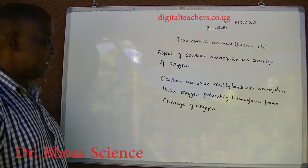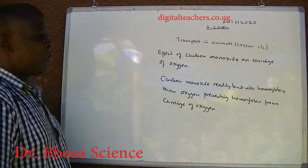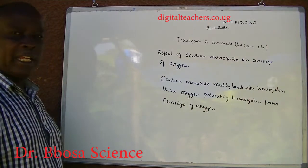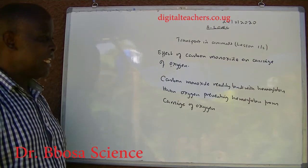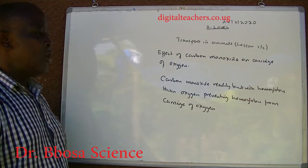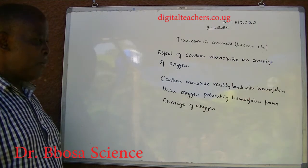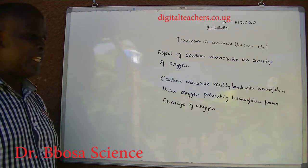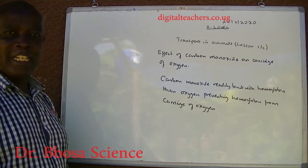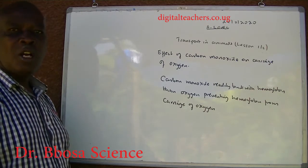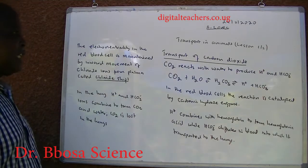The effect of carbon monoxide on carriage of oxygen: carbon monoxide readily binds with hemoglobin more than oxygen, preventing hemoglobin from carrying oxygen, and it leads to death.